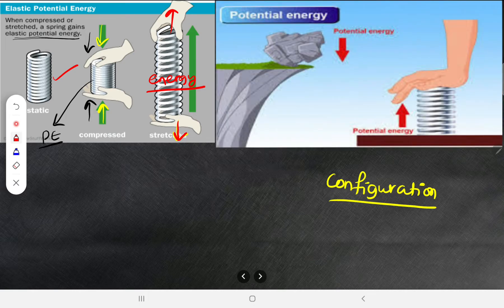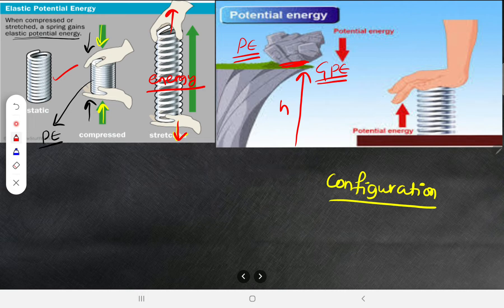There are stones at a certain height — due to that they have potential energy, called gravitational potential energy (GPE). When a spring is pushed and bounces back, that is also potential energy — called elastic potential energy, due to its configuration.